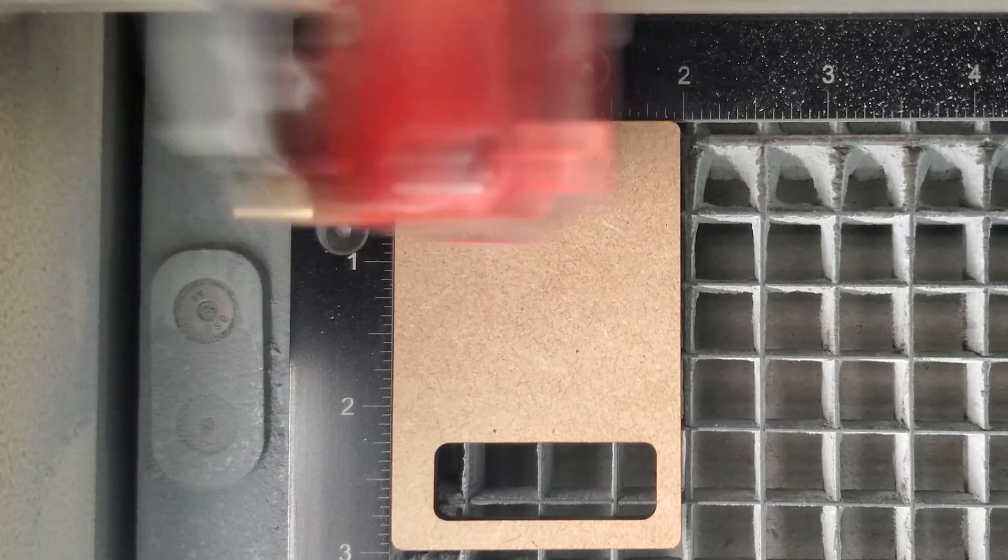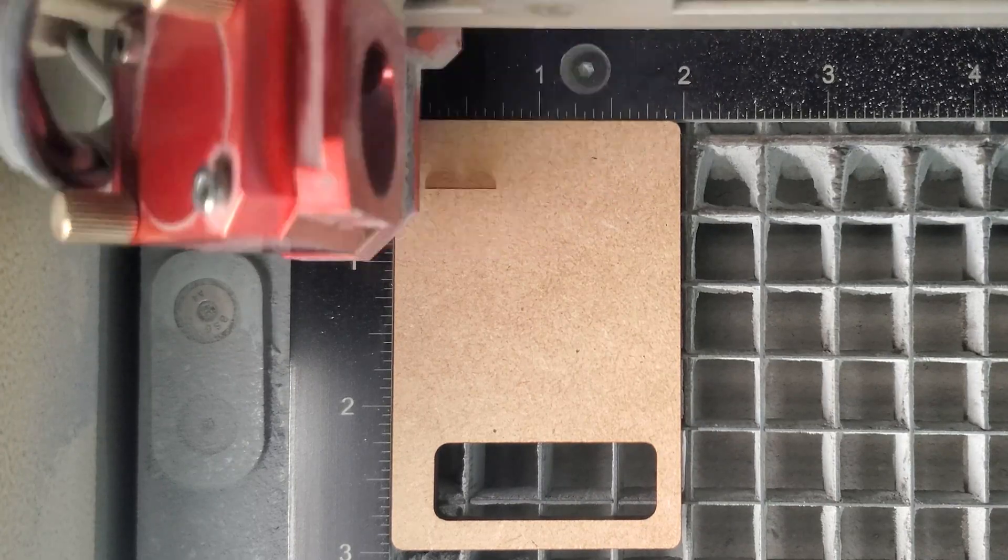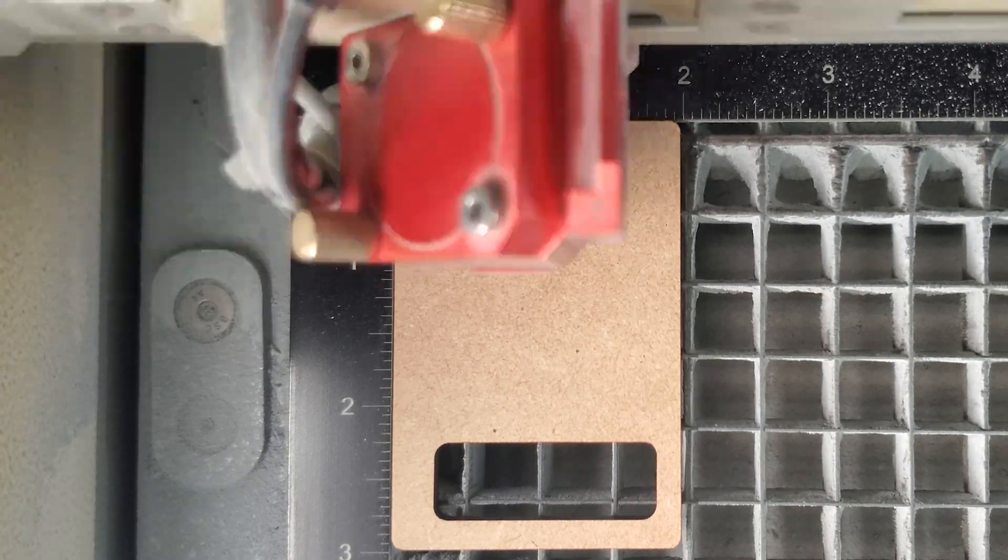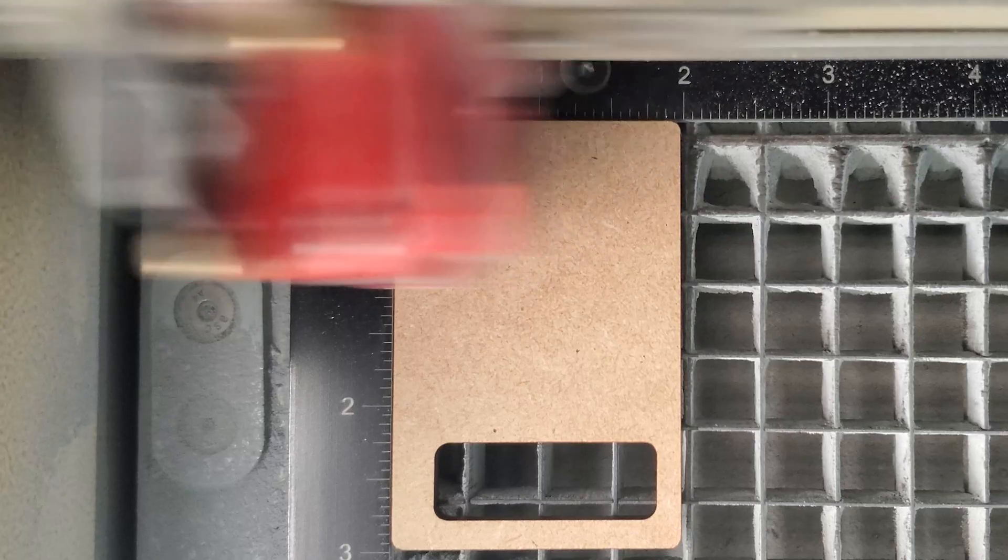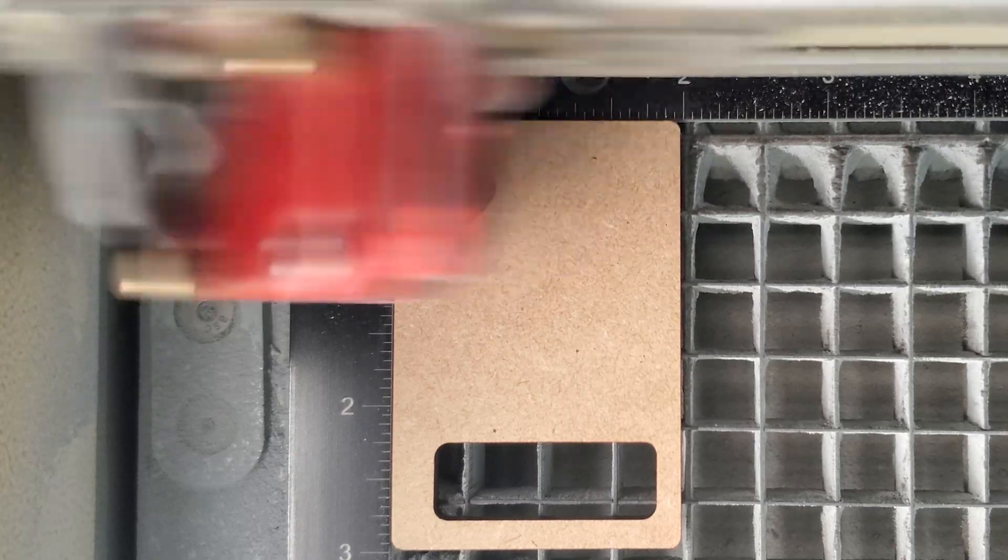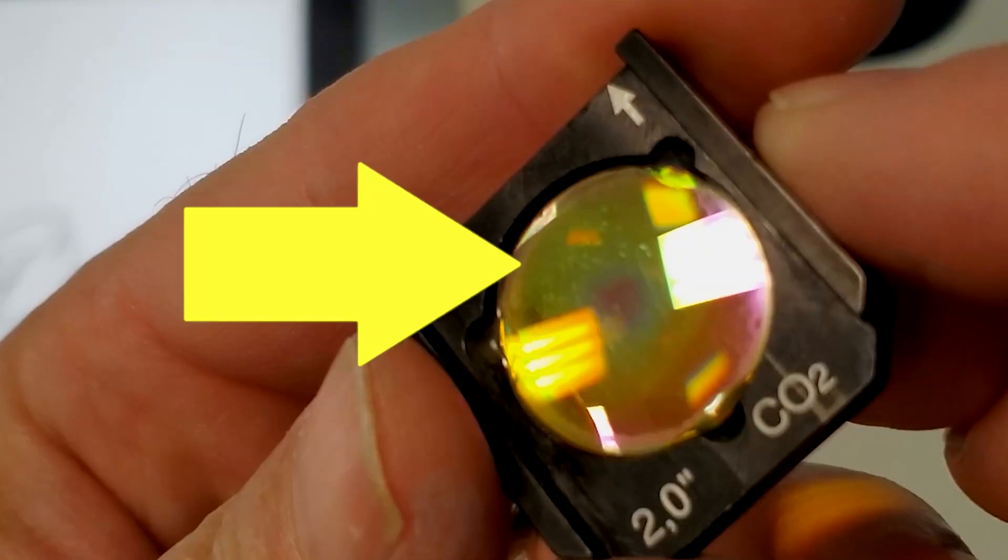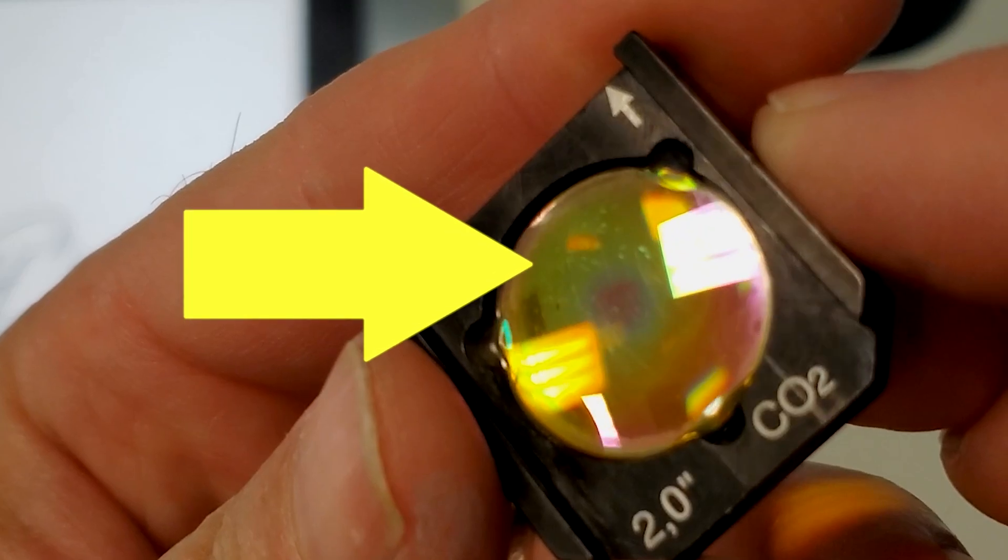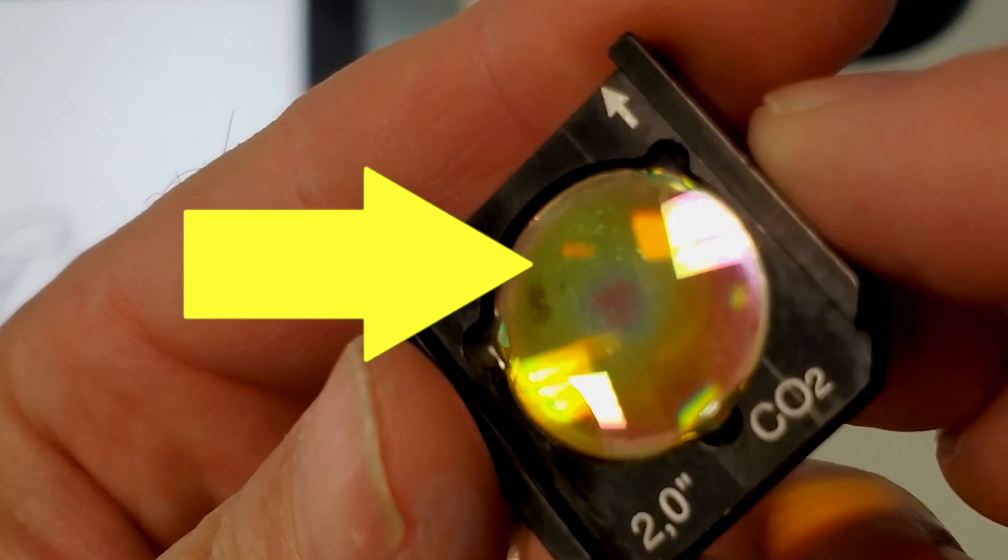Another reason I wouldn't put solution directly on any optics is if you intend to use the machine immediately after cleaning. Cleaning solution evaporates quickly, but not if it pools into crevices. If you run your machine after cleaning with air assist on, the remaining solution can be blown all over the lens.